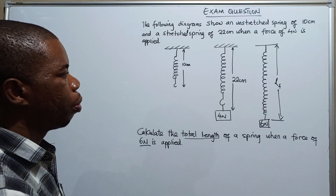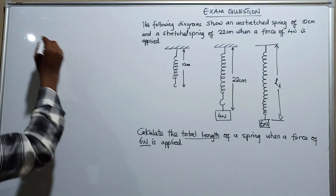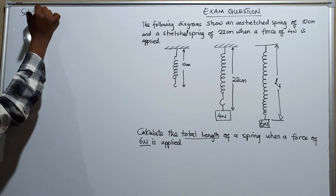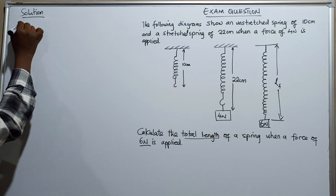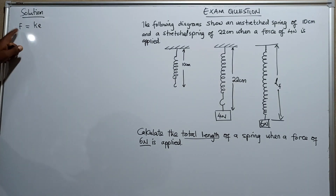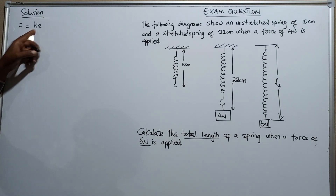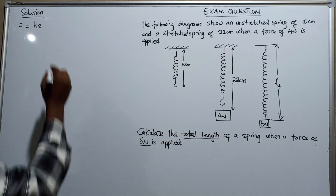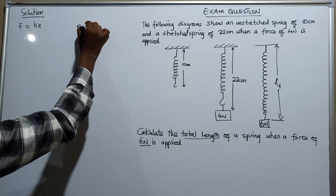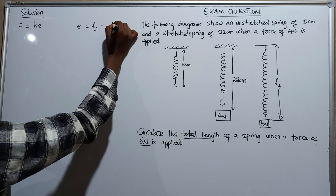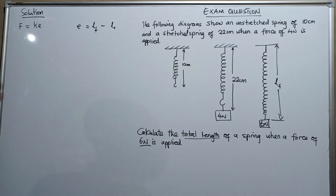To answer this question you need to apply Hooke's Law. Let me write the solution. Hooke's Law in terms of a formula is F = ke, where F is the force, k is the spring constant, and e is the extension. This extension is also found by: extension equals final length of the spring minus original length.